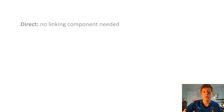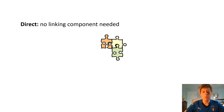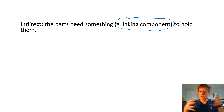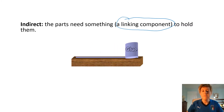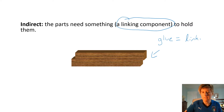For our first category: if a link is direct, no linking component is required. Looking at these puzzle pieces, they just snap into place — they don't need anything like glue, tape, nails, or screws to put them together. On the opposite side, an indirect link requires something to put them together. A linking component is a piece of material that puts two parts together. For example, the glue puts the two pieces of wood together, so the glue acts as the linking component.